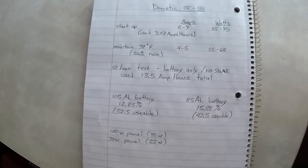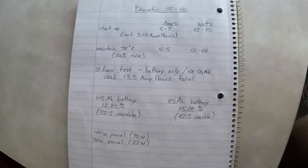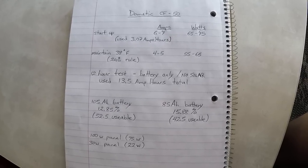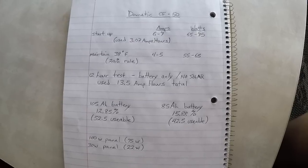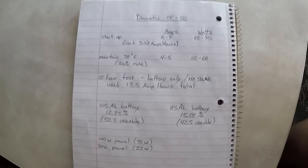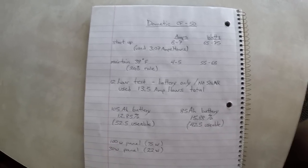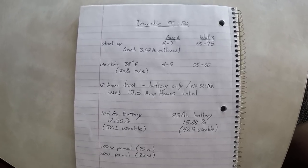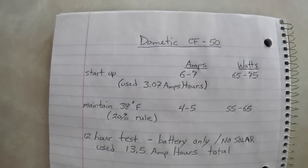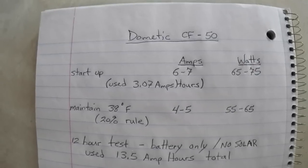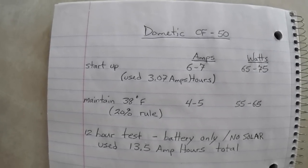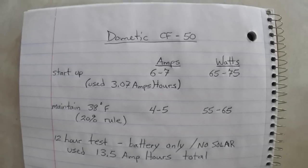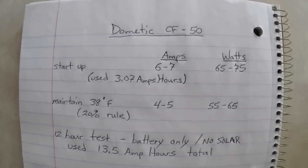I did this test, a startup test in the camper. The refrigerator was sitting at about 65 degrees and I plugged it in and let it cool down to 38 degrees. During that process, when it started up and was starting that cool down process, it used about 6 or 7 amps, varying there. It was also using 65 to 75 watts through that process. That took about 30 minutes, and during that time period it consumed 3.07 amp hours to get the refrigerator cooled down to 38 degrees. It took just a little more than three amp hours.